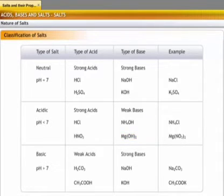On the other hand, salts formed from weak acids and strong bases are called basic salts with a pH value of more than 7. Consider the salts like sodium carbonate and potassium acetate, which are obtained from weak acids like carbonic acid and acetic acid on reaction with strong bases like sodium hydroxide and potassium hydroxide.